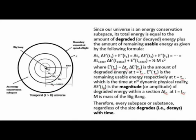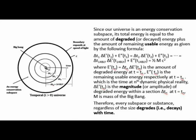Since our universe is an energy conservation subspace, its total energy equals the amount of degraded or decayed energy plus the amount of remaining usable energy, as given by a formula. Here, delta e-prime of t-n is the amount of degraded energy at t equals t-n; e-prime of t-n is the remaining usable energy at t equals t-n, which is the time at the nth dynamic physical reality. Delta e-prime of t-n is the magnitude of the degraded energy within a section delta t-n at t equals t-n.